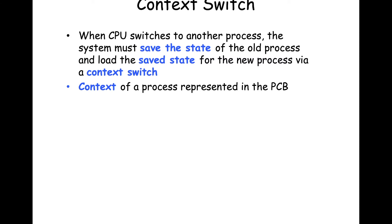When we last left off, we talked about this idea of context switching — the saving away of process state in order to load the CPU with the state of a different process when execution switches from one process to the next. This context switch takes time, and therefore in the operating system we want to have it as fast as possible, avoiding too much switching and unnecessary overhead. The context of a process is stored in a data structure called the process control block, or PCB.